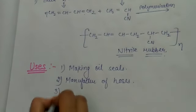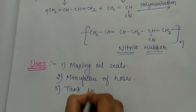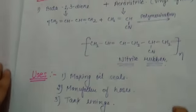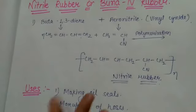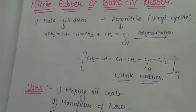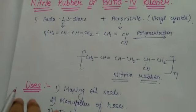Uses of nitrile rubber: first, nitrile rubber is used for making oil seals, then it is used for manufacture of hoses, and third it is used as tank linings. Today we studied nitrile rubber, SBR rubber, natural rubber and synthetic rubber. We have completed all the topics, so today my topic ends here. Thank you so much.